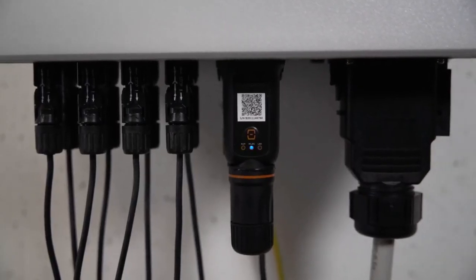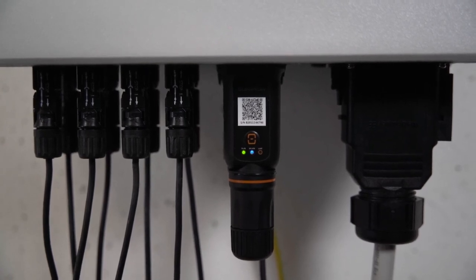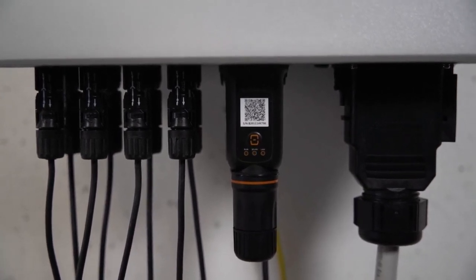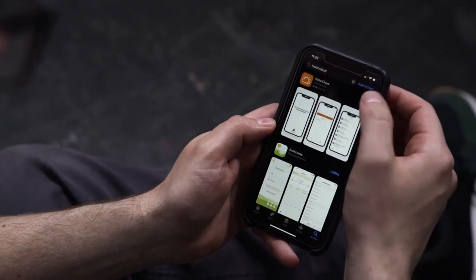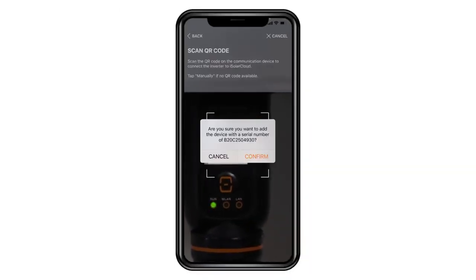When connected, the Ynet module takes some minutes to fully boot. To finalize the setup, you need to download the iSolarCloud app. You may find a detailed commissioning video on our YouTube channel.